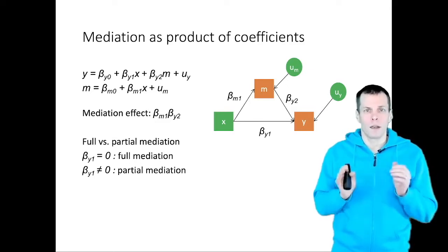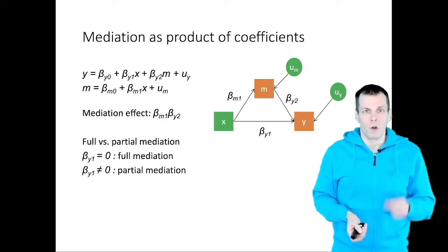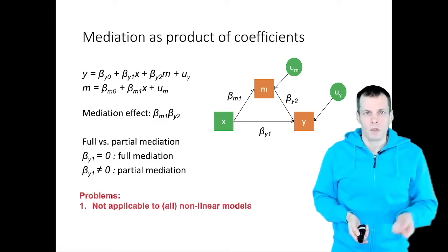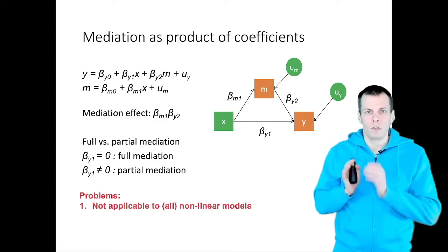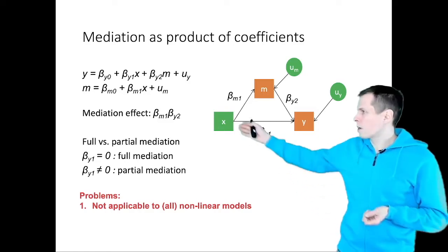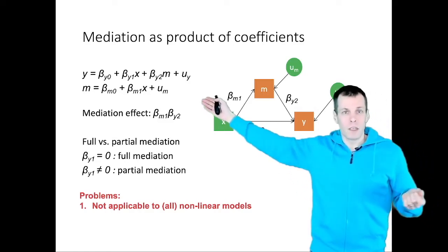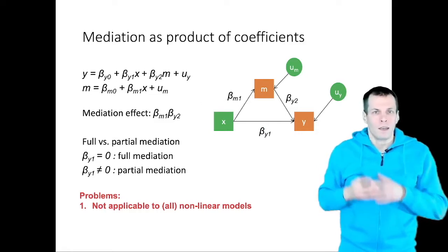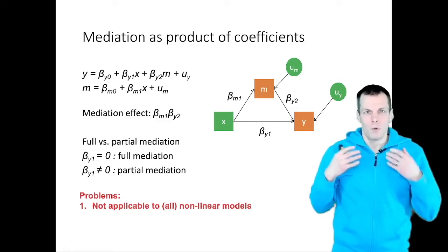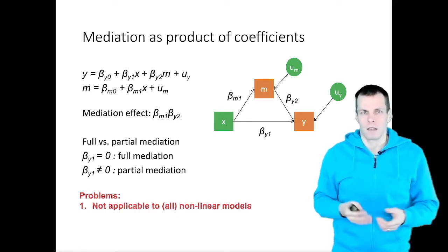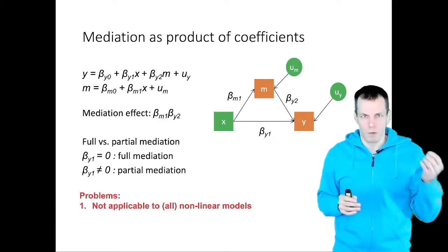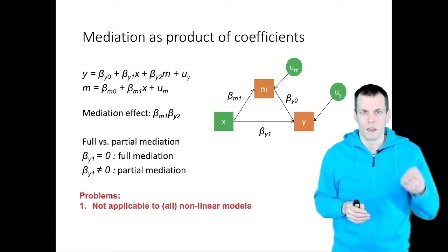This approach and the linear models have a couple of important limitations. The first problem is that this approach is applicable to only a few special cases of non-linear models. For example, if the model for the mediator is a logistic regression model, the product of coefficients wouldn't really apply. The product would not make any sense in that case, and in some cases the product might make sense but the result it gives would still be incorrect.